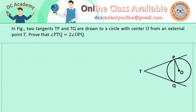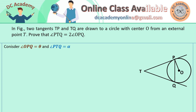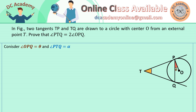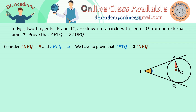TP and TQ are the two tangents, and what we need to prove is that PTQ and OPQ are in the ratio 1:2. So, we let the angle OPQ equal theta and the angle PTQ equal alpha, and mark these two angles appropriately in the figure. Using theta and alpha makes the calculation a little easier. Therefore, we need to prove that alpha is equal to two times theta.